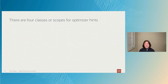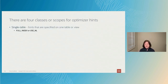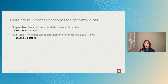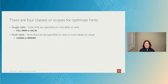Hints are classified into four categories based on their scope. The first category is single-table hints — hints specified on just one table or view, like the FULL hint, INDEX hints, and the USE_NL hint. Although USE_NL influences a join, you're only allowed to specify it on one table — the table you want on the right-hand side of the join, often called the inner table. The second category is multi-table hints, specified on multiple tables, like USE_HASH, the LEADING hint, and the ORDER hint.